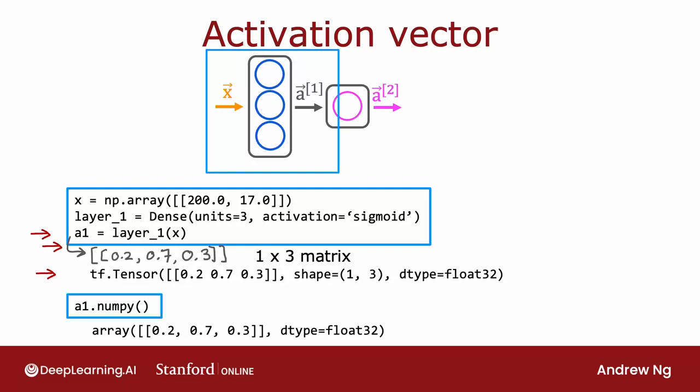And what is a tensor? A tensor here is a data type that the TensorFlow team had created in order to store and carry out computations on matrices efficiently. So whenever you see a tensor, just think of it as a matrix on these few slides. Technically, a tensor is a little bit more general than a matrix, but for the purposes of this course, think of a tensor as just a way of representing matrices. So remember I said at the start of this video that there's the TensorFlow way of representing a matrix and the NumPy way of representing a matrix. This is an artifact of the history of how NumPy and TensorFlow were created. And unfortunately, there are two ways of representing a matrix that have been baked into these systems.